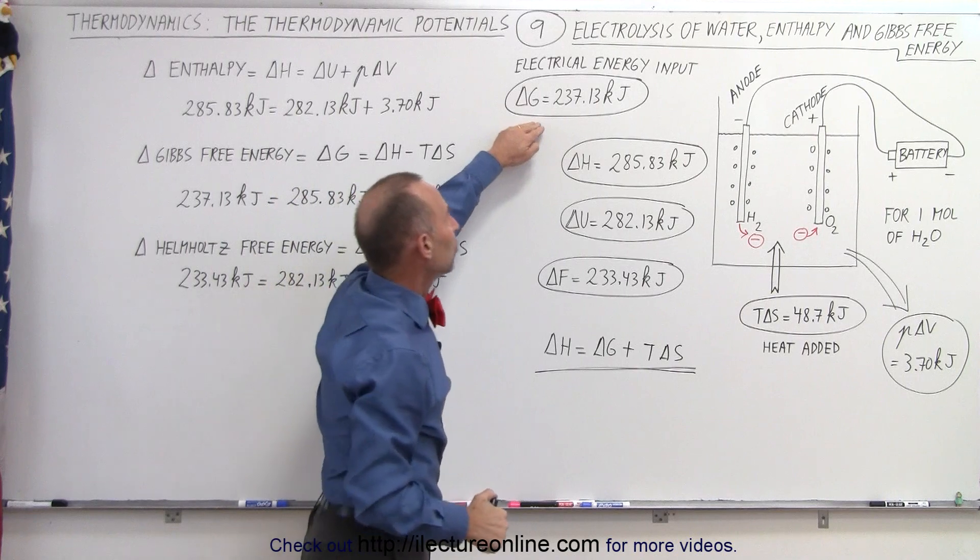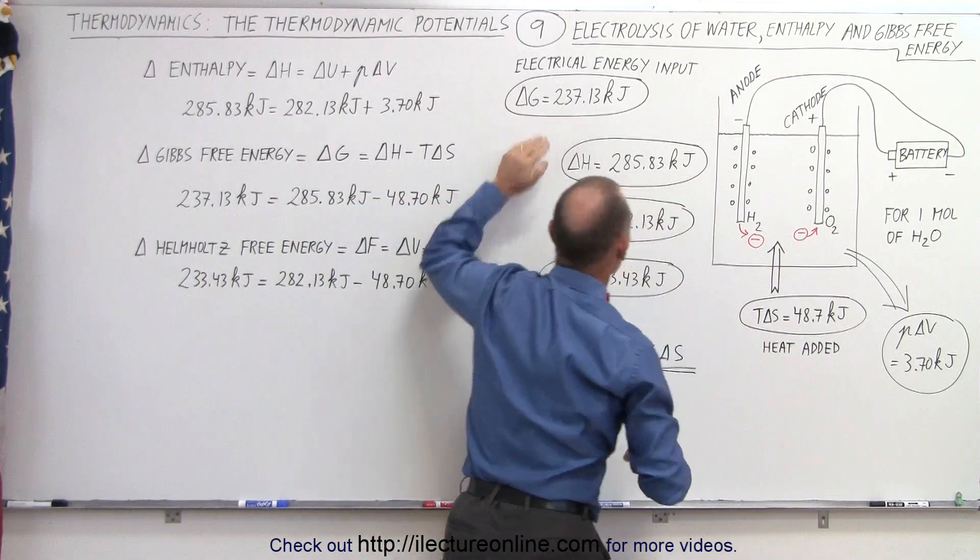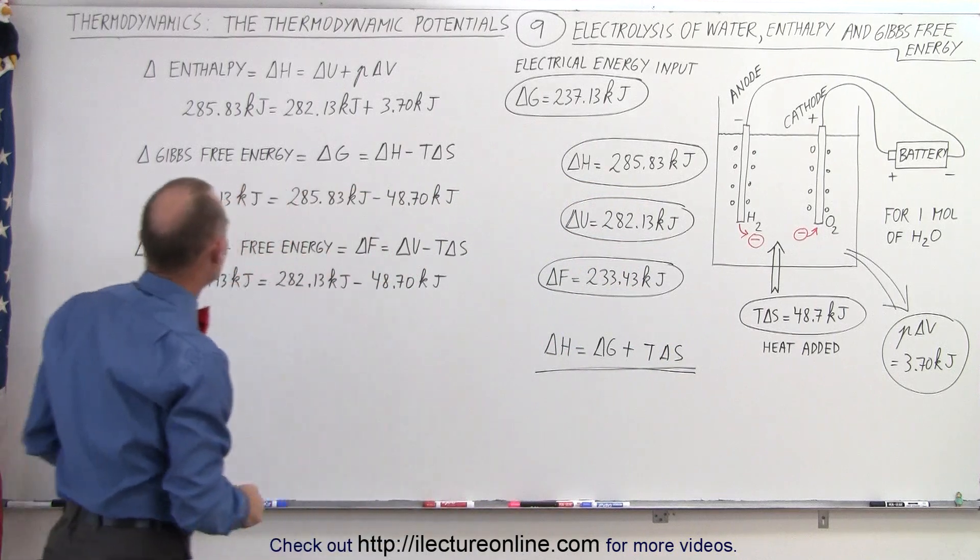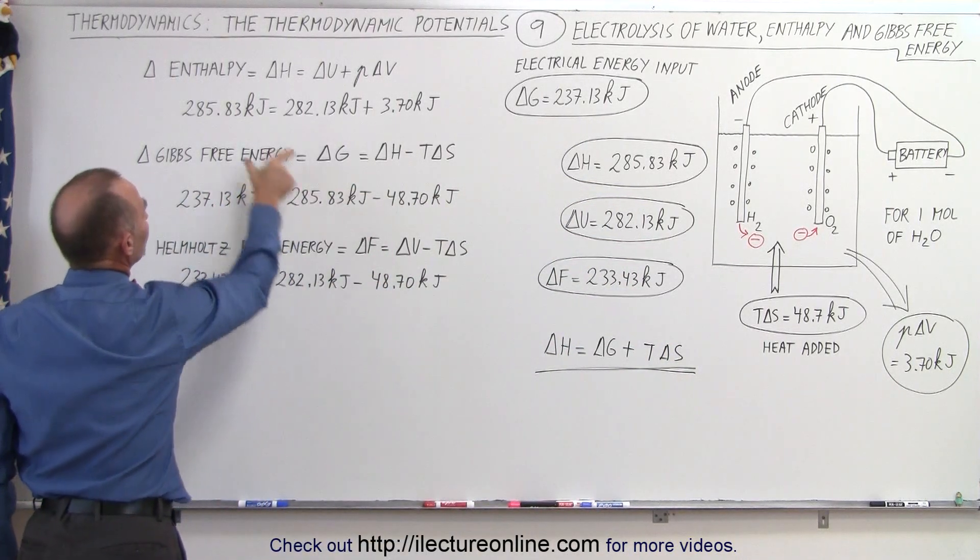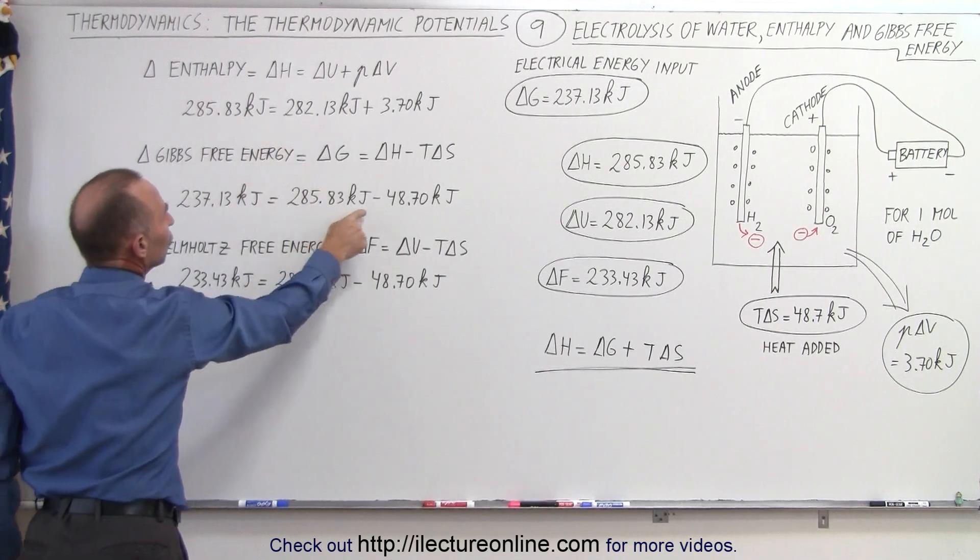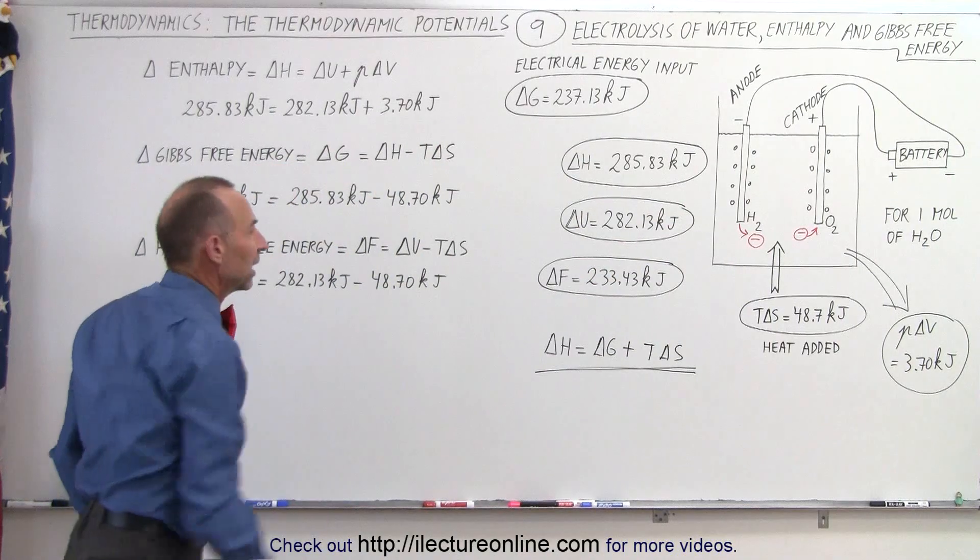So it's the electrical energy input, not including the heat added to the system. So we can see that the Gibbs free energy is the total delta H, 285.83 kilojoules, minus the heat added to the system, gives us the Gibbs free energy.